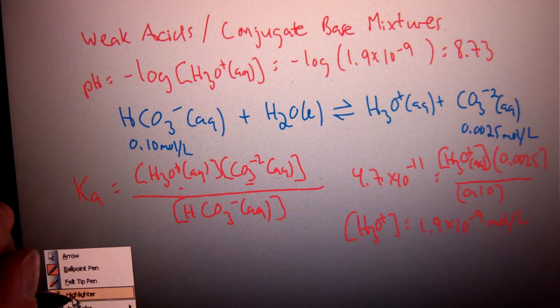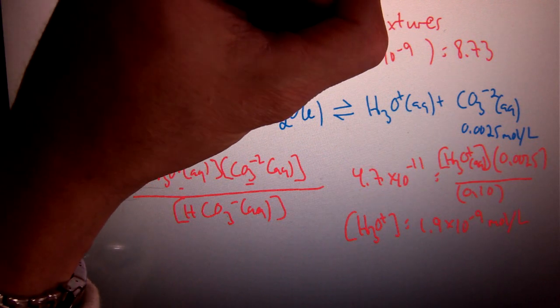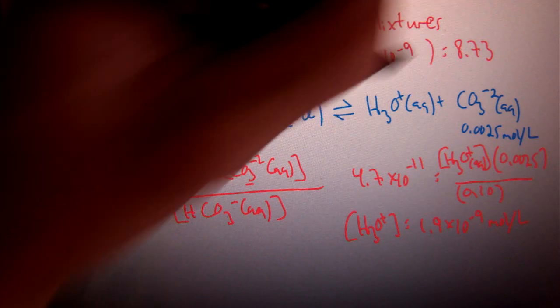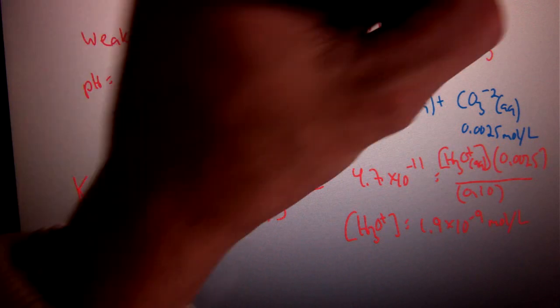Just one other thing to remind you. Don't forget about the significant digit rules of pH. I have two significant digits in my concentration. Therefore, that equates to two decimal places in my pH.